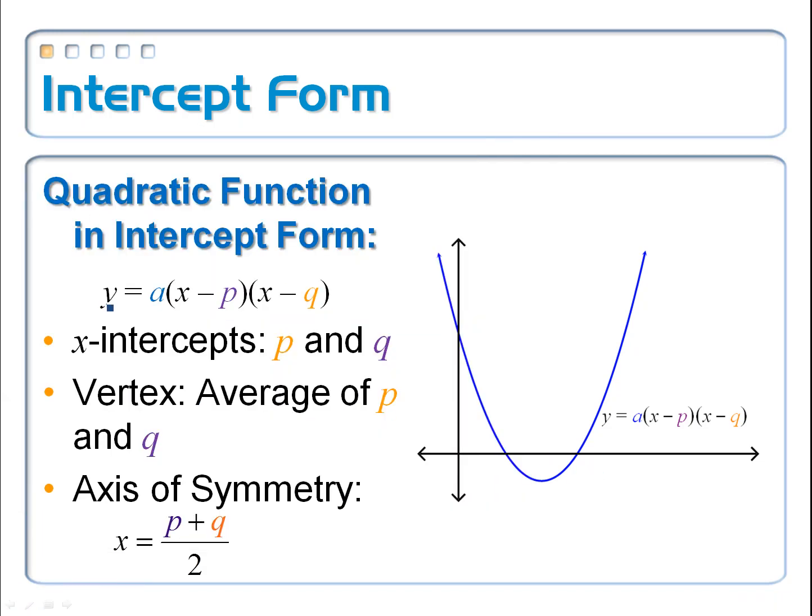So in intercept form, this is y equals a times x minus p times x minus q. The a just makes it fatter or skinnier. The p and the q are the two x-intercepts. And in order to get the vertex here, I take the average of these two. I add up the x-intercepts, the p and the q divided by 2. And that gives me the equation of the axis of symmetry. That's also the x-coordinate of the vertex.